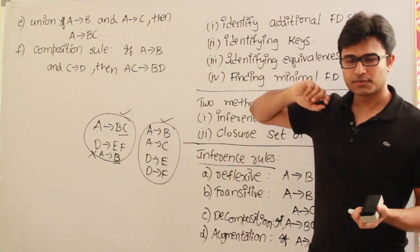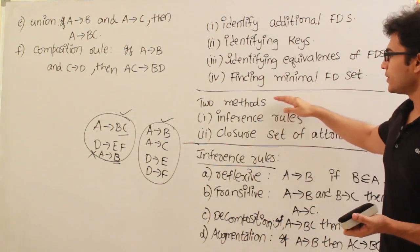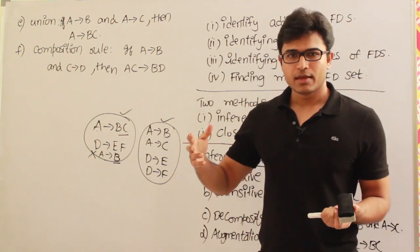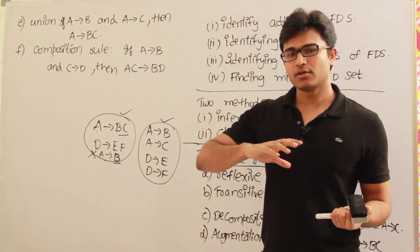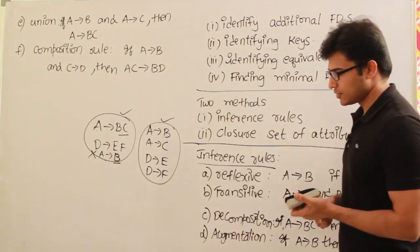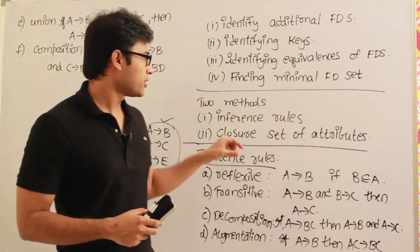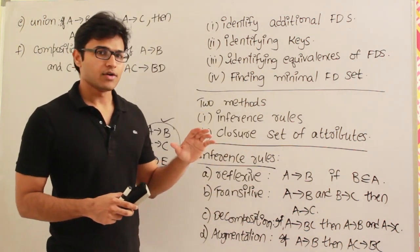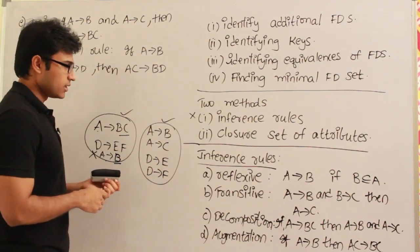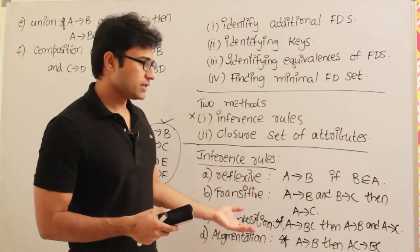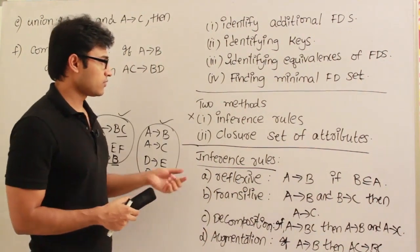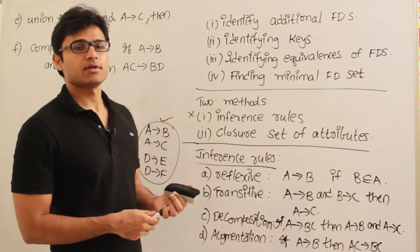To perform all these activities, there are two well-known methods. One is using inference rules — a set of pre-specified theorems you can apply to derive results and perform operations on FDs. The other is using the closure set of attributes. However, for GATE exams and interviews, using inference rules takes too much time, so we are not going to use them for problem solving.